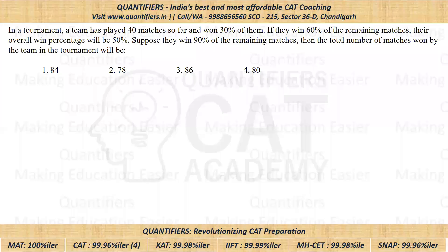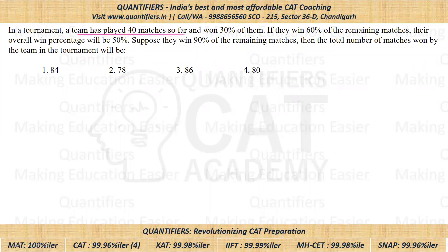Now let us come to the question. I hope all of you have tried it. This was one of the easier questions in this lot. A team has played 40 matches till now and they have won 30% of them. If they win 60% of the remaining matches, their overall winning percentage would be 50%.